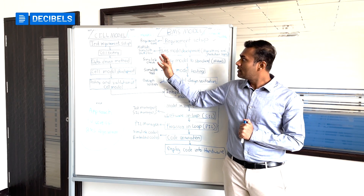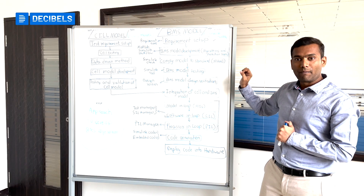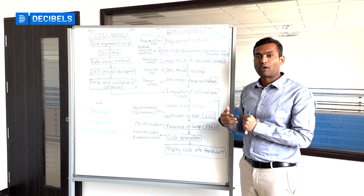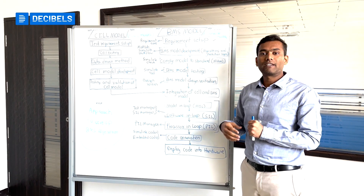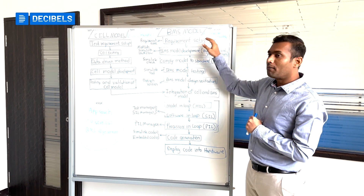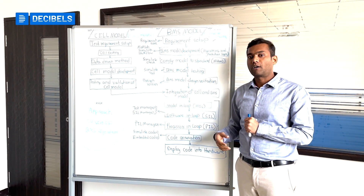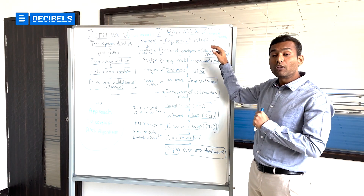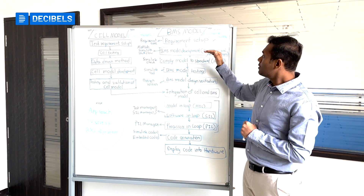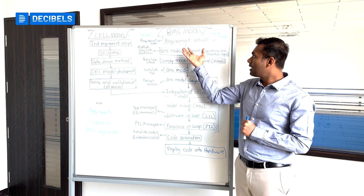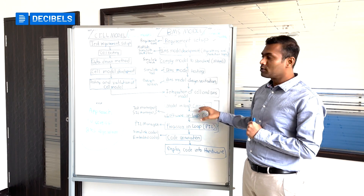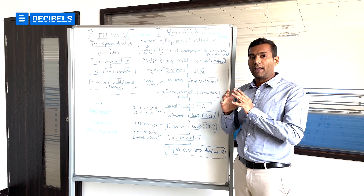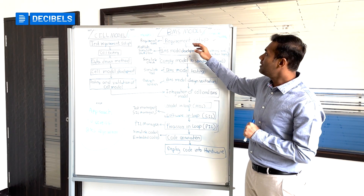Once the digital twin is done, we move to the control model development. Let us say you work for a Tier-1 supplier like Bosch, Continental, or Delphi, or any company that makes battery management systems. You get your requirements from the OEMs — maybe Honda Motors, Mahindra, Mercedes, or BMW. They give the system-level requirements of what they want the BMS to do. Those inputs are given to you as the person who needs to develop these algorithms.